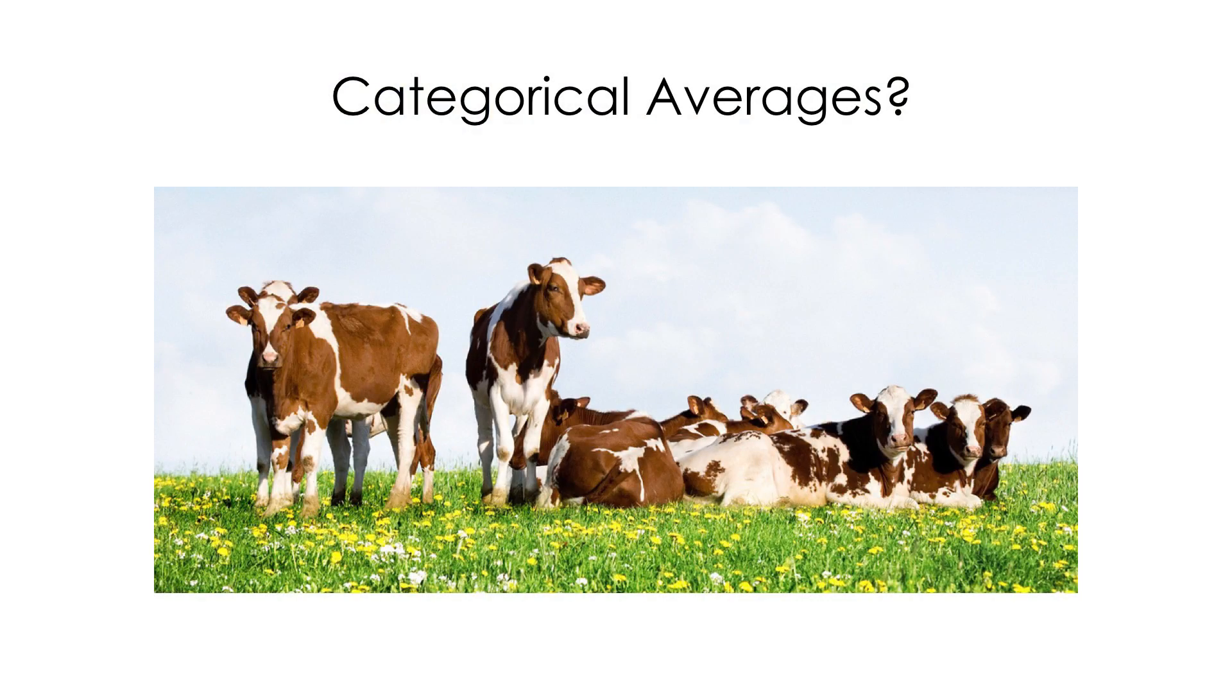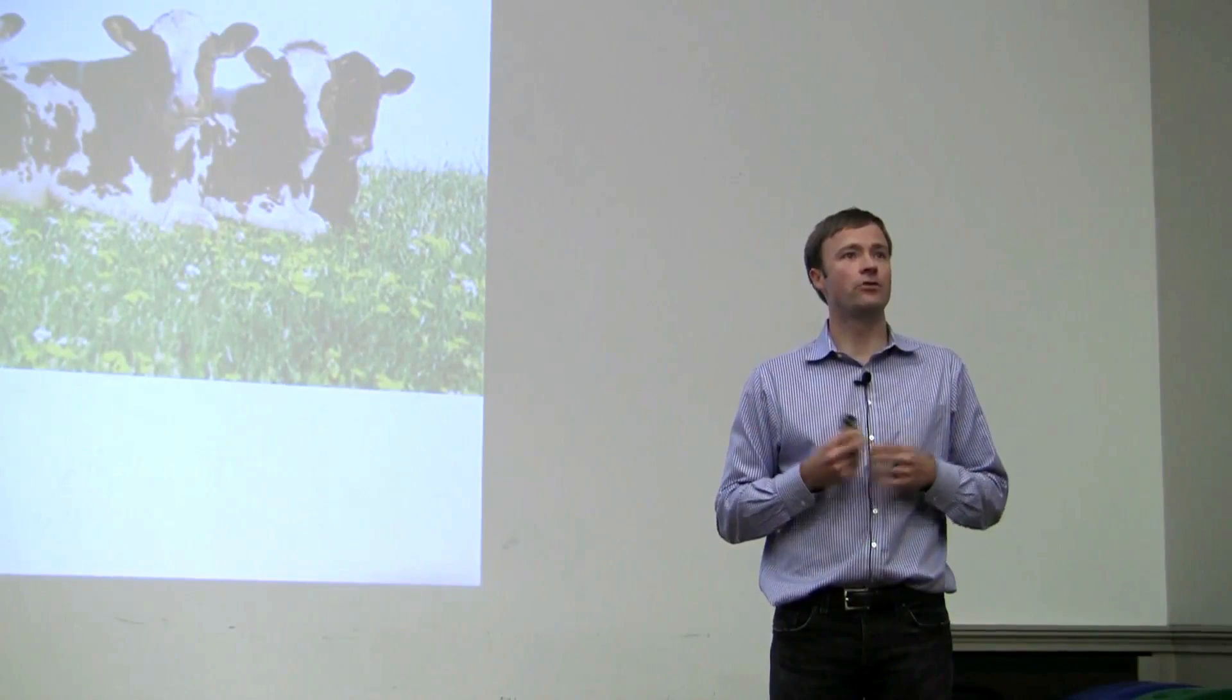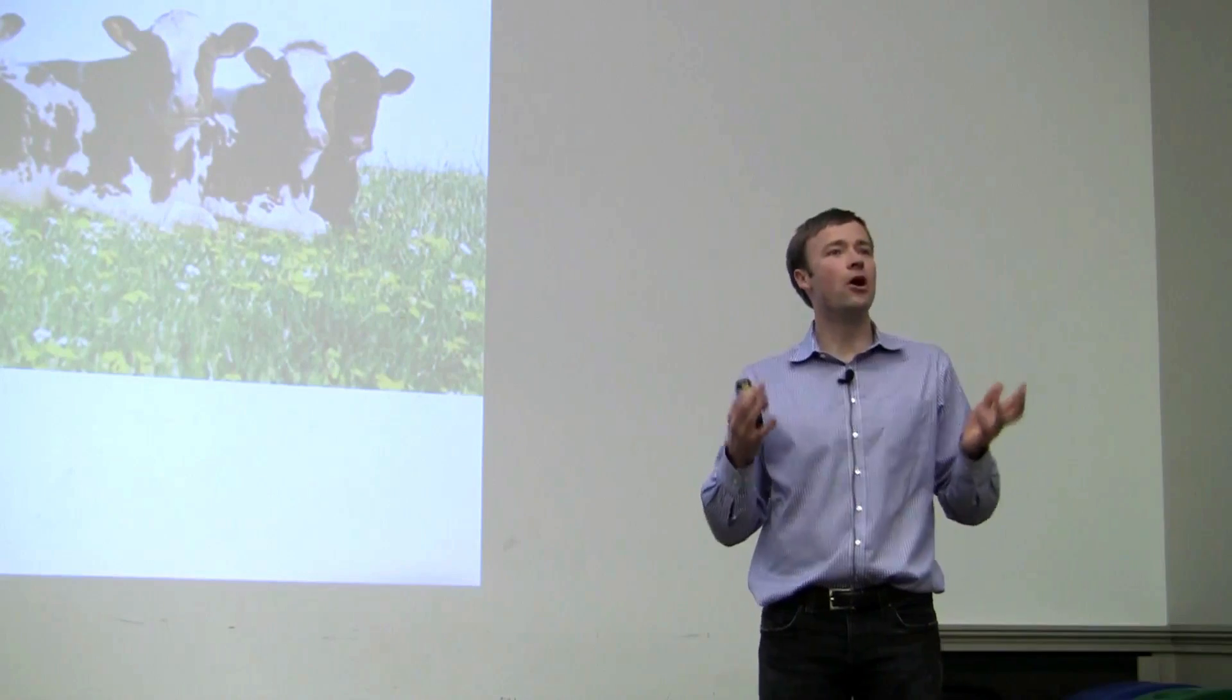So imagine that I'm a Martian. And since cows keep landing in this class, you land into this marsh field. And you want to look at, let's say, you find these Y chromosomes. And you want to look at the average number of Y chromosomes in the population. So what would you find? We know that males tend to have one Y chromosome.